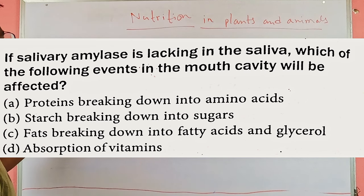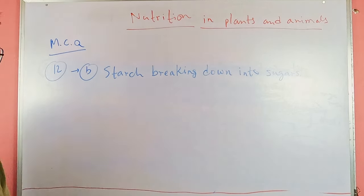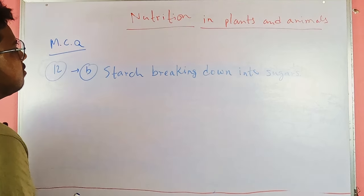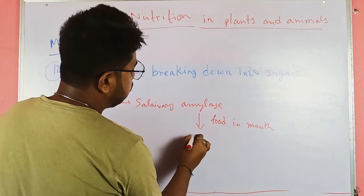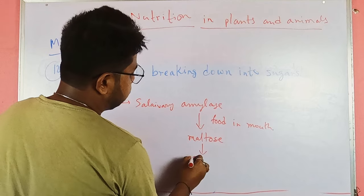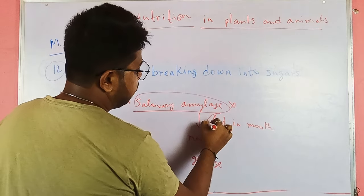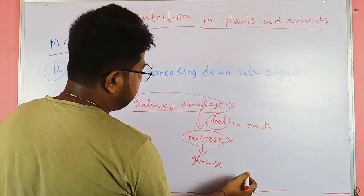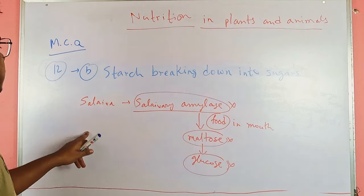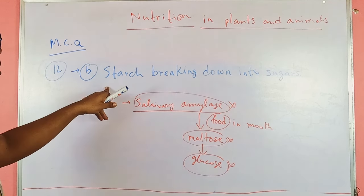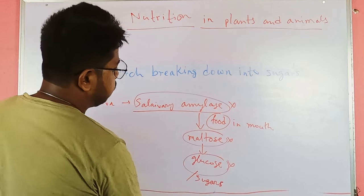If saliva in our mouth does not have the amylase enzyme, what process will be hampered? The correct option is B: starch breaking down into sugars. Salivary amylase breaks down food in the mouth into maltose and then into glucose. Without salivary amylase, no breaking down of food into maltose or glucose will happen, so the first process of digestion will be hampered.